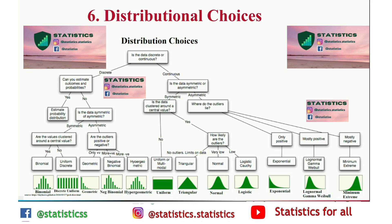The sixth topic is distributional choice. The term distributional choice refers to whether the data is discrete or continuous. If our data is discrete, you can estimate outcomes and probabilities. If our data is continuous, we check whether the data is symmetric or asymmetric, then classify further. This flowchart gives a clear picture of which distribution to apply to gain more insights from the dataset.